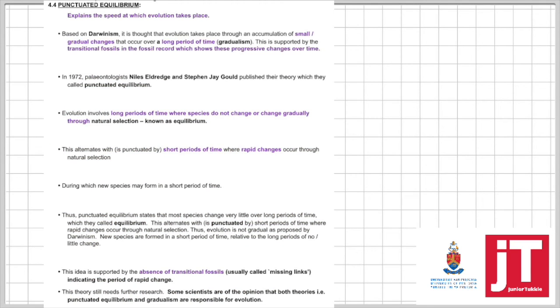Let's look at punctuated equilibrium. Punctuated equilibrium is the speed at which evolution takes place. Now we are looking at Darwinism. Darwinism is also known as gradualism. Darwin says there are small gradual changes that take place in organisms over a long period of time, and he used his evidence to look at transitional fossils over time.